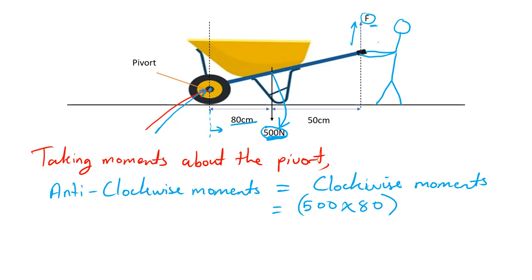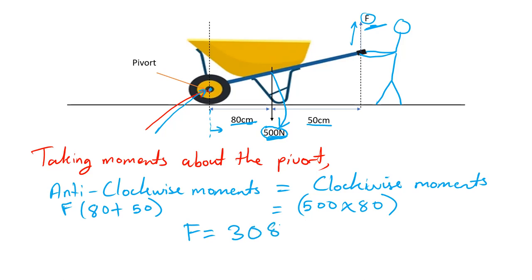The other force required to lift the entire wheelbarrow acts in the anti-clockwise direction about the pivot. The anti-clockwise moment will be F times the distance from that force to the pivot, which is 80 cm plus 50 cm = 130 cm. Solving this gives the force F = 308 N, and that is the minimum force required to lift the wheelbarrow.